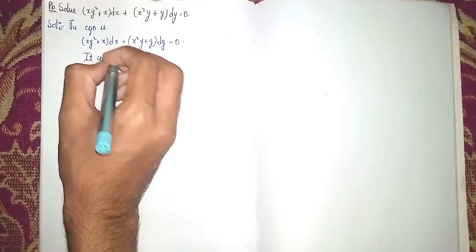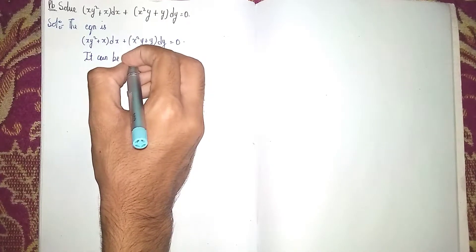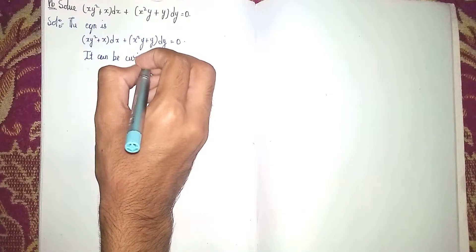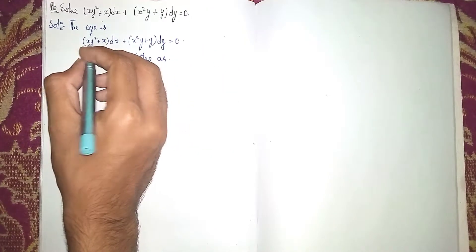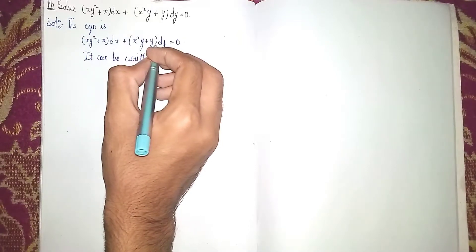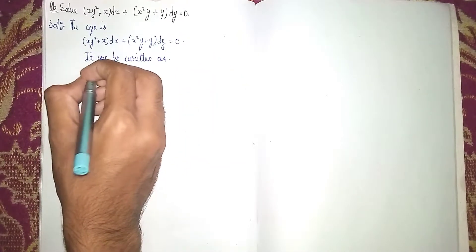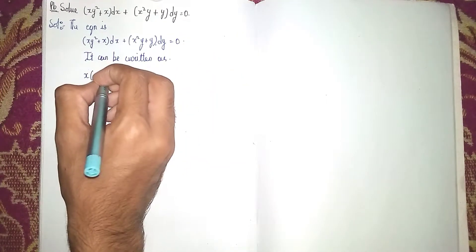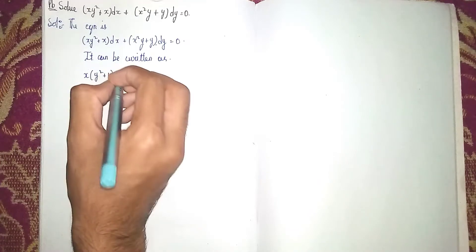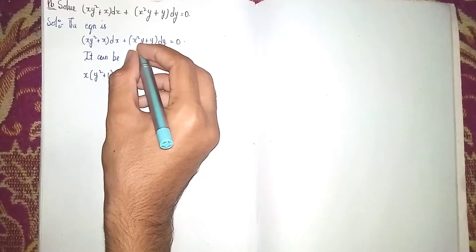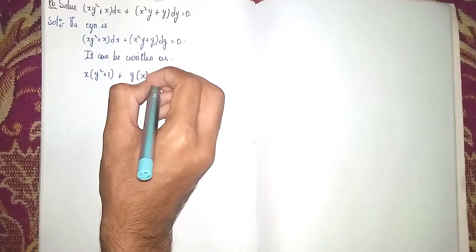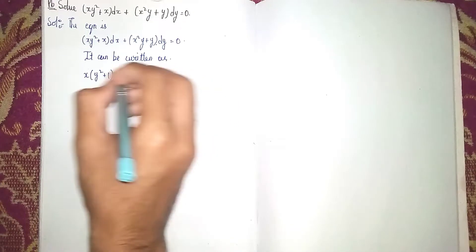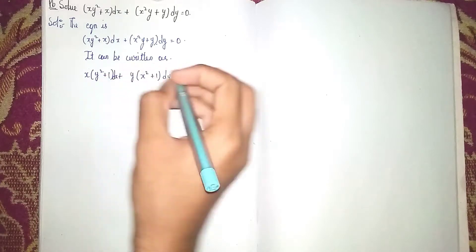This can be written by taking x common from the first part and y common from the second part, giving us x(y² + 1)dx plus y(x² + 1)dy = 0.